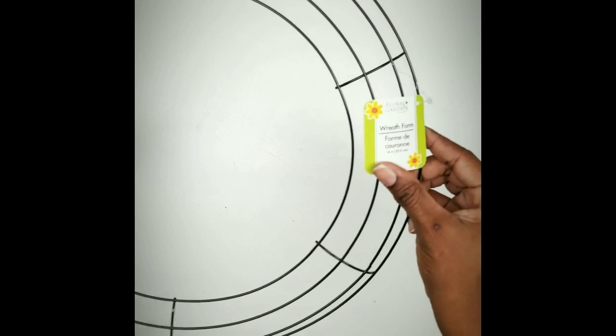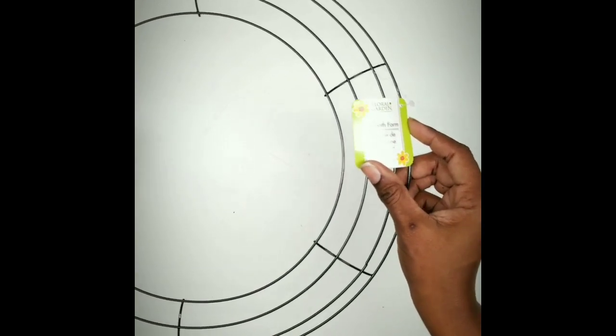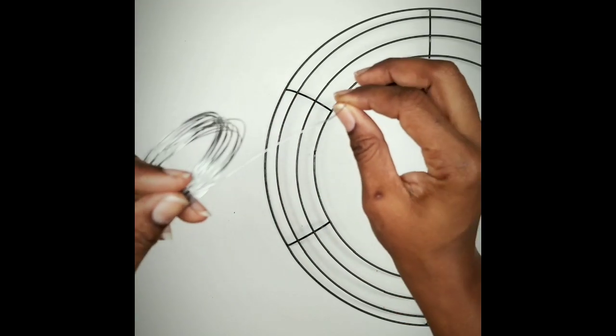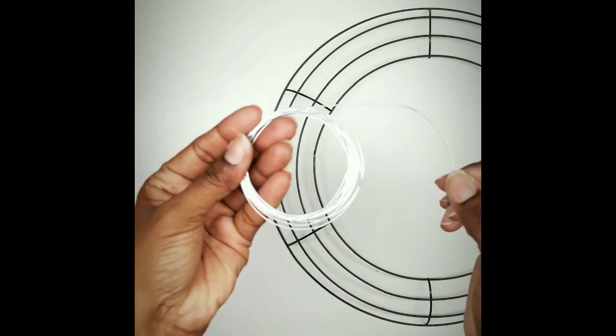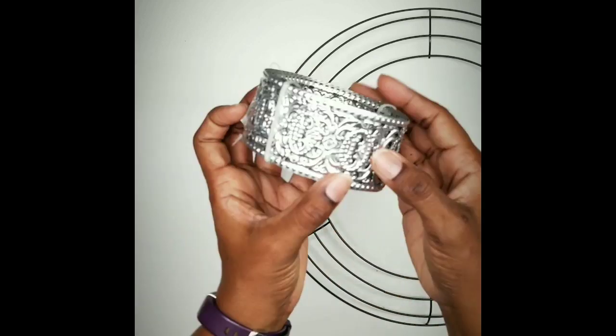Going over the items we need, we need one wreath form from the Dollar Tree. We're going to need some wire, you can also get this from the Dollar Tree from the hardware section. Very pliable and bendable, and we'll need one roll for the assembly.